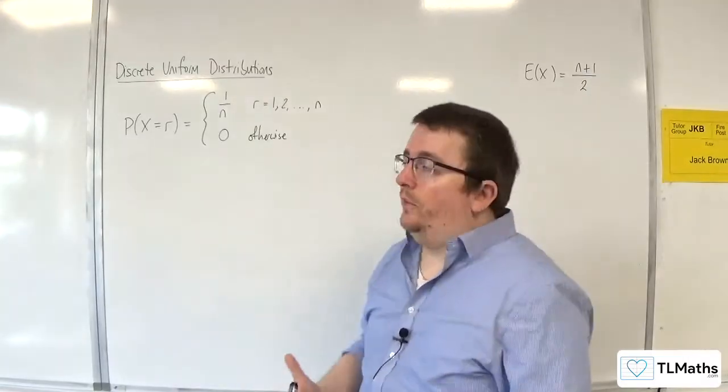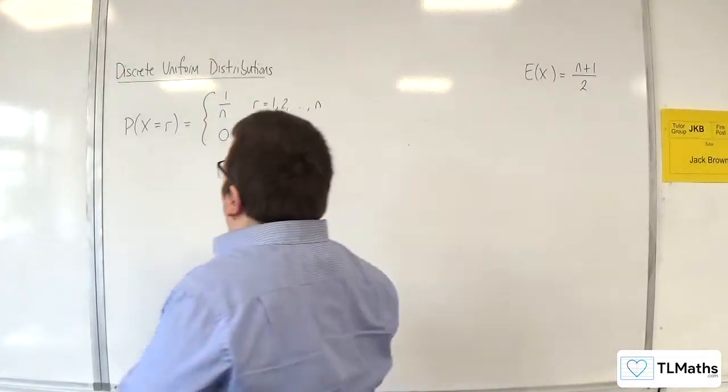So we've derived E of X, now we want to derive Var of X for the discrete uniform distribution.